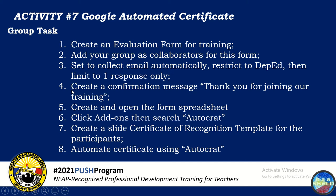Number four, create a confirmation message: 'Thank you for joining our training.' Number five, create and open the form's spreadsheet. Number six, click add-ons then search Autocrat. Number seven, create a slide certificate of recognition template for the participants. And number eight, automate certificate using Autocrat.